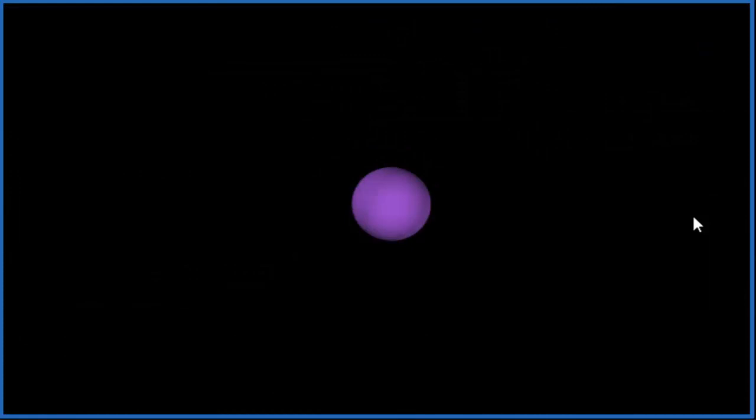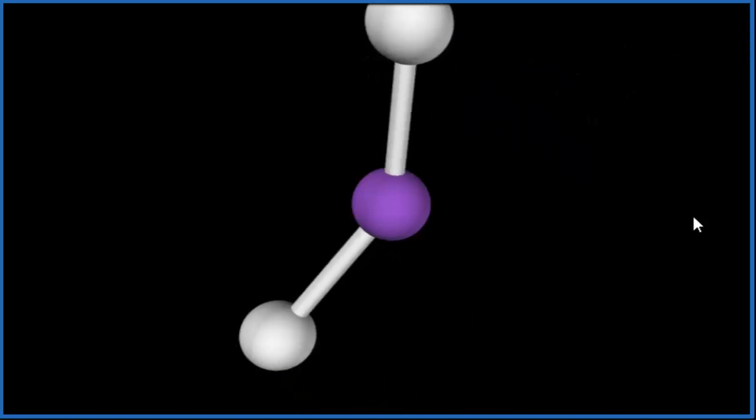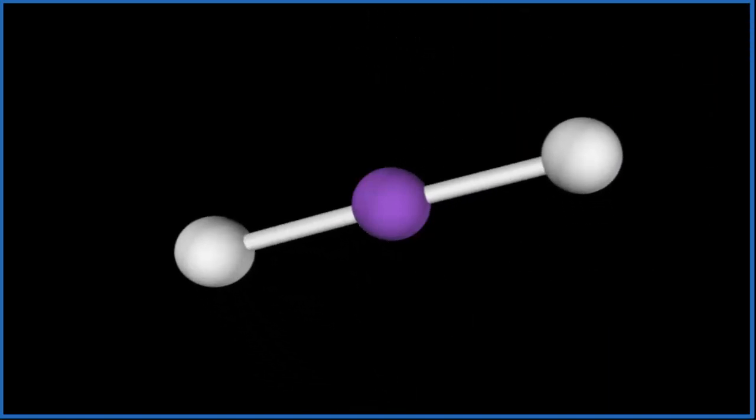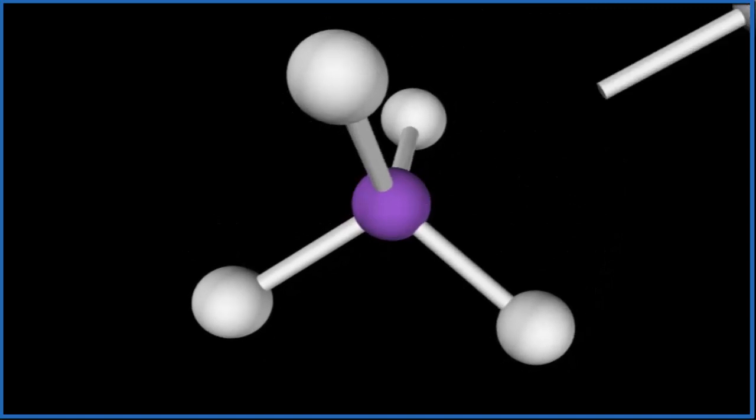So imagine the purple atom in the center. That's the Xe. We add five fluorine atoms. One, two, they spread out to be as far away as they can from each other. Three, four, five.